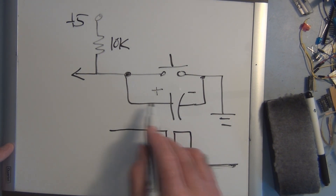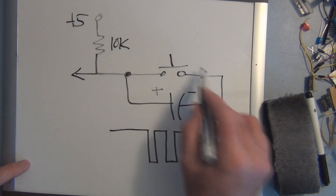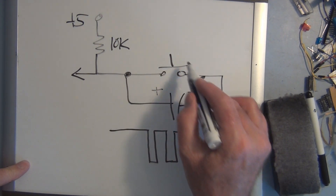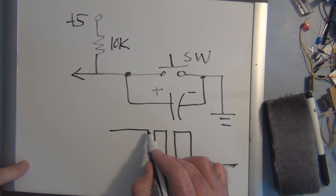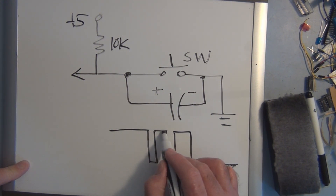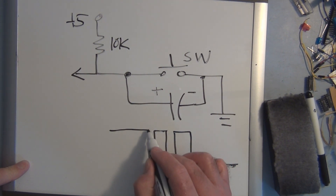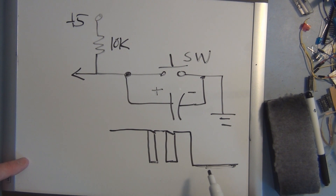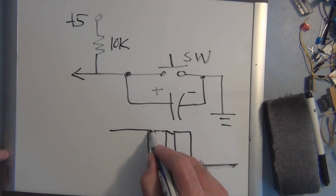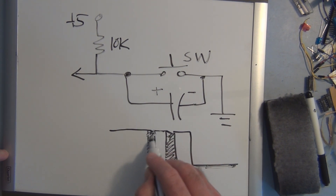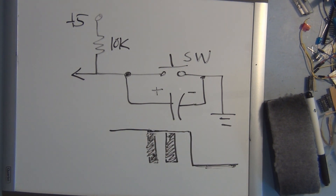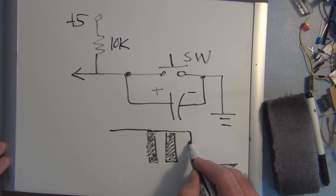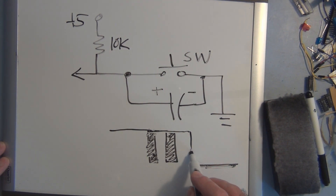When the switch closes, the capacitor now has a discharge path to ground and it'll discharge through the switch. But it takes time. So before the voltage goes back up to five volts during intermittent contact, the capacitor will maintain five volts during those short gaps, essentially filling in the false glitches due to the mechanical nature of the switch. But the downside is that when you finally reach the settling point going to zero, there's a slope due to the time it takes to discharge.